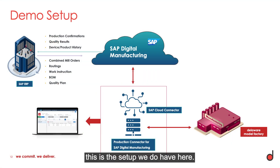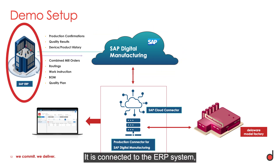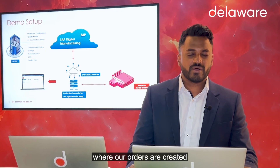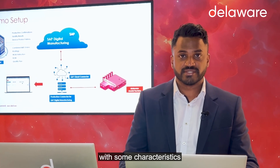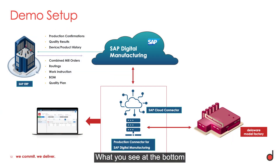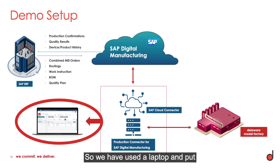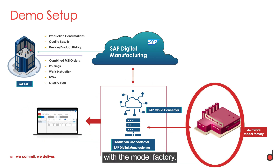This is the setup we have here. We have Digital Manufacturing as a core, connected to the ERP system S/4, where our orders are created, linked together, and enriched with characteristics specific to the mill industry. At the bottom is our physical plant — we used a laptop with the SAP Cloud Connector and production connector to communicate with the model factory via OPC UA.